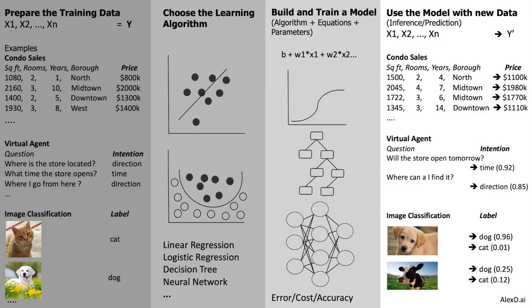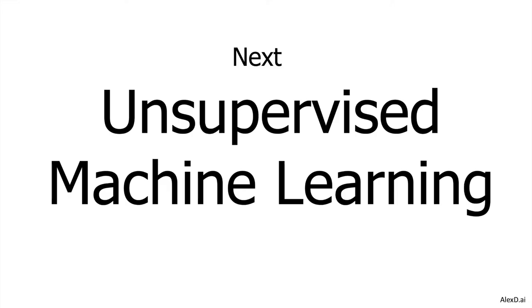This is supervised machine learning. You start with training data, you use a learning algorithm to build a model, and when the model reaches an accuracy you consider great, you move it to production. In production, you get answers — answers associated with probabilities.